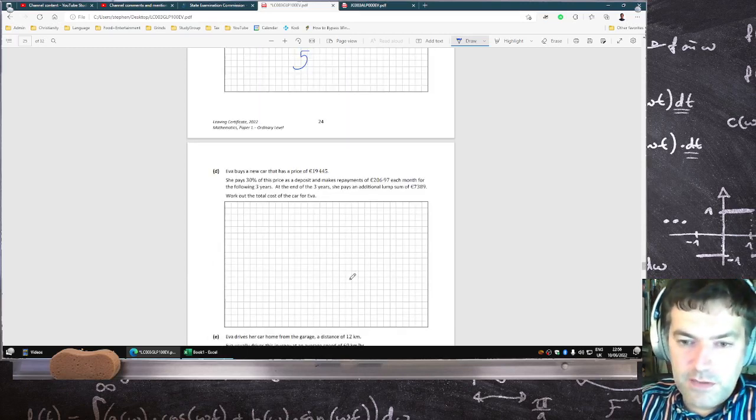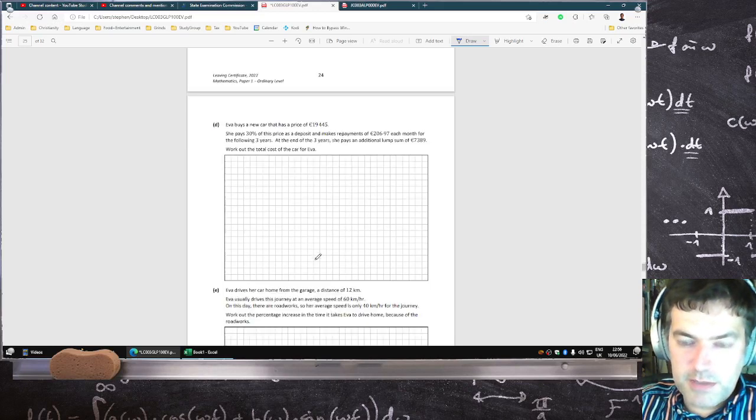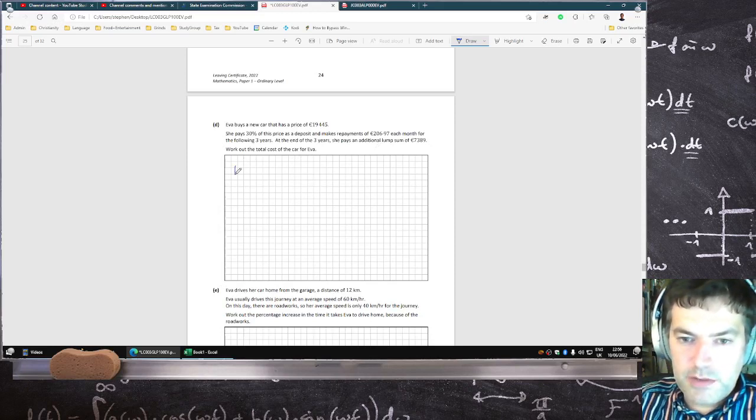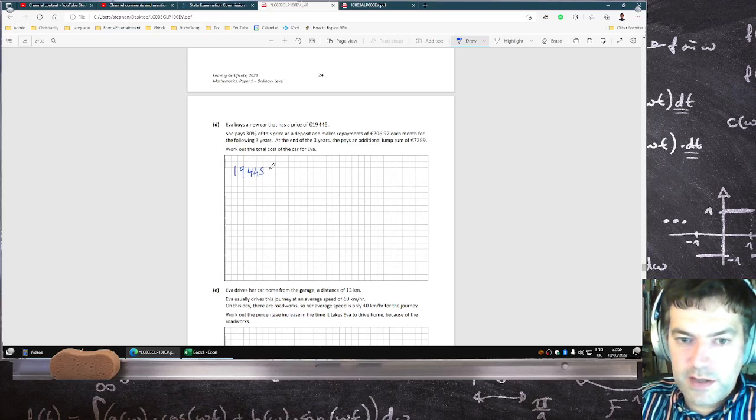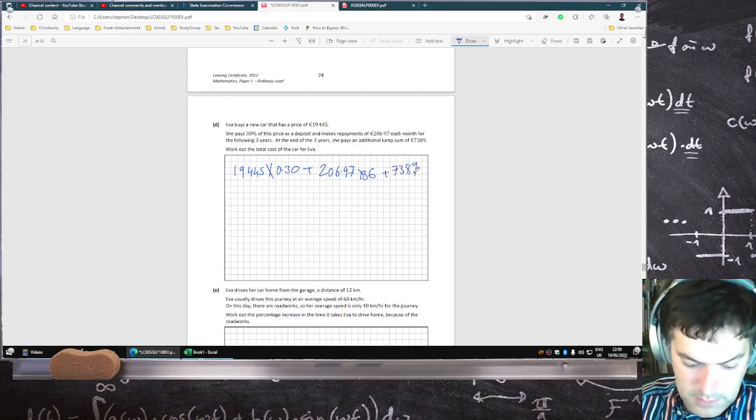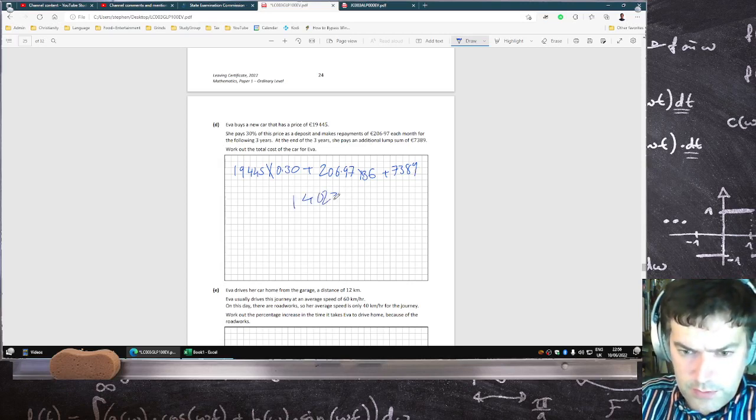Eva buys a new car at 19,445. She pays 30% of the price deposit and makes repayments of 206.97 per month for three years. At the end of three years, she pays an additional lump sum. Work out the total cost of the car. So the total cost would be 19,445 times 30%, that's the deposit, plus the repayments of 206.97 each month for the following three years, that's 36 months, plus the lump sum of 7,389 at the end. So that's 140,234.2.